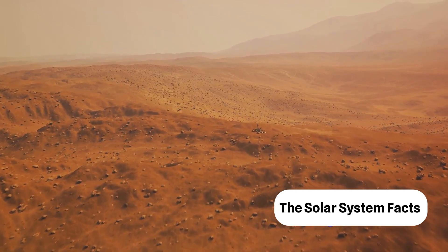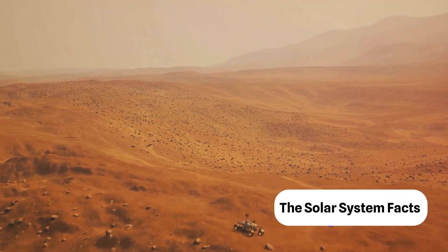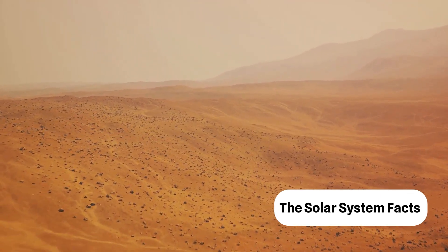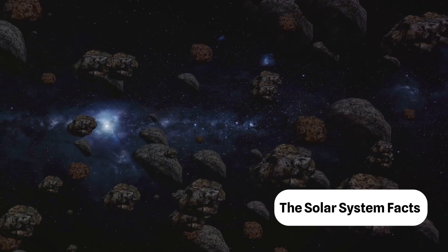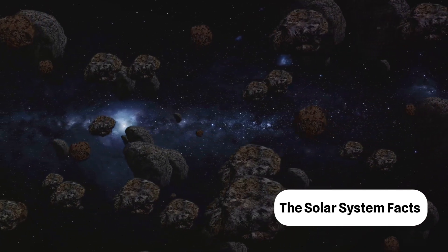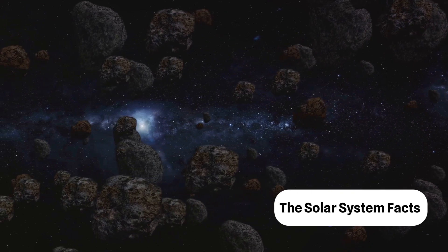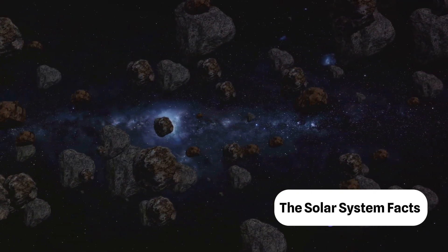Then comes the asteroid belt, a chaotic region of space filled with remnants from the early solar system. It's like a cosmic junkyard filled with pieces that never quite made it into becoming a planet. Beyond the asteroid belt, we enter the realm of the gas giants.